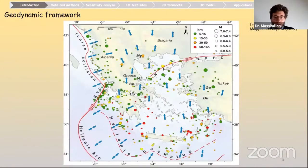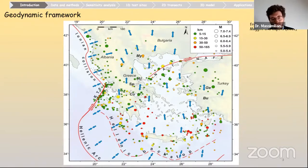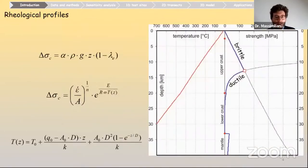For the geodynamic framework, I will go quickly here because the previous speakers have already thoroughly described it. Generally, the study area corresponds to the broader Aegean region, including also the Western Anatolia region. For the rheological profiles, we assume the classical approach with brittle and ductile deformation.